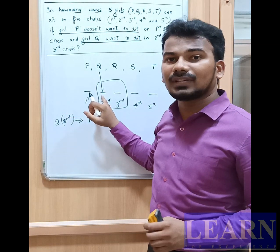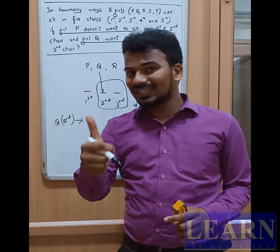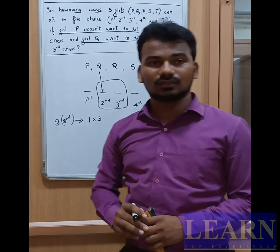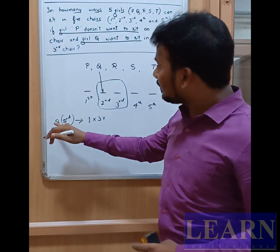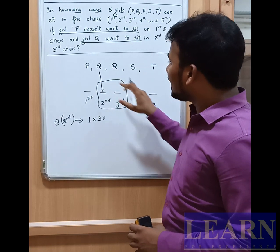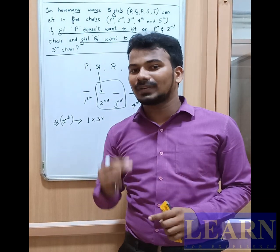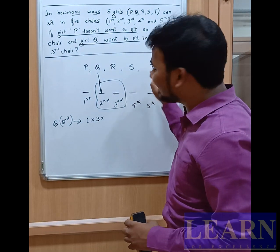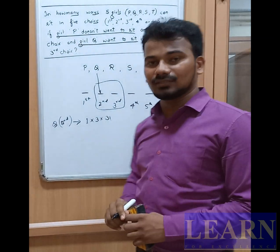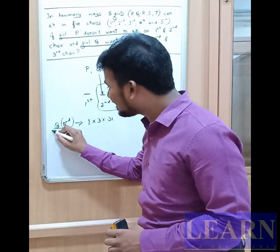So P can sit in any of the third, fourth, or fifth chairs — that gives 3 possible ways for P. With Q and P placed, the remaining students R, S, and T can be seated in any of the three remaining places, which can be done in 3! ways. So for Case 1, the count is 3! × 3.